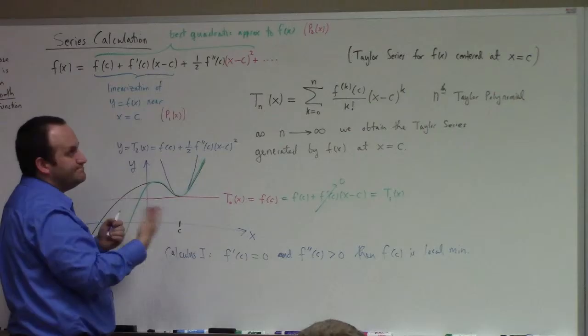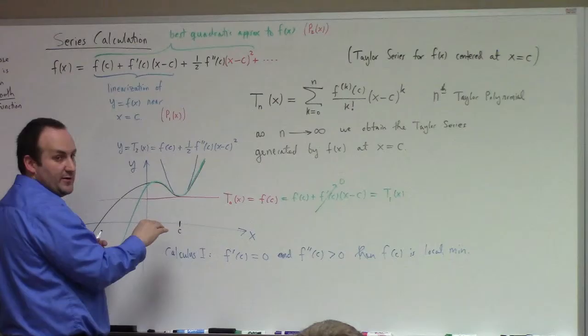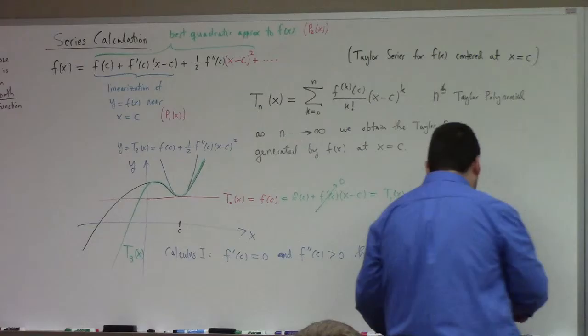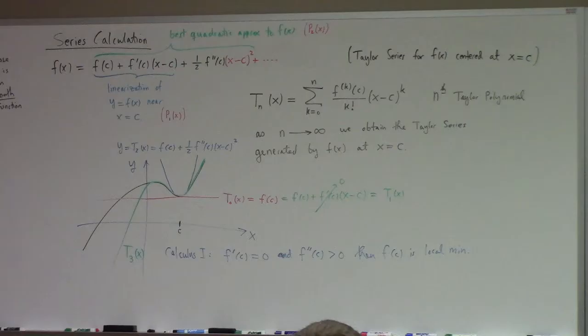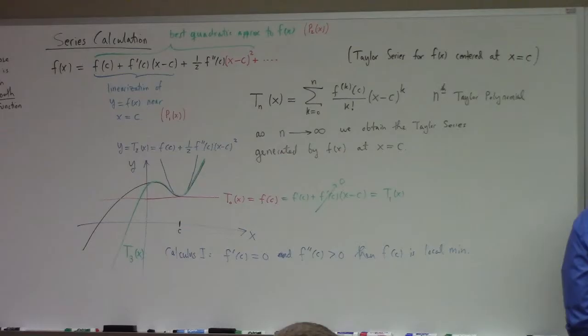What if the first three derivatives were zero but the fourth one was non-zero? Close to the point, it would look like a quartic — a steeper bowl, more like a field goal shape. If the fourth order is positive, it's a minimum; if negative, it's a maximum. If the first non-zero term is an odd power, then there's neither a max nor a min — you can show it's a saddle. This is the generalized max-min test based on the Taylor polynomial. I wanted to stop and discuss what the terms in the Taylor series mean, and there it is.